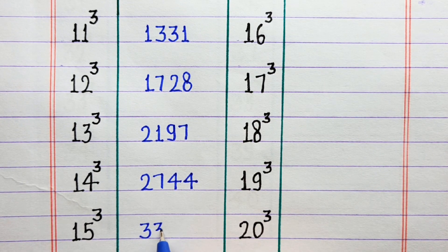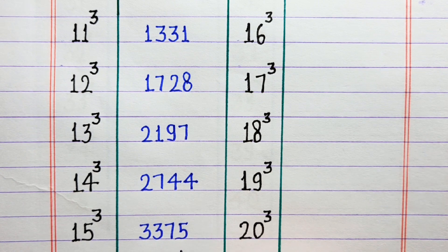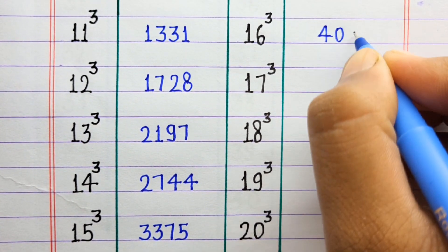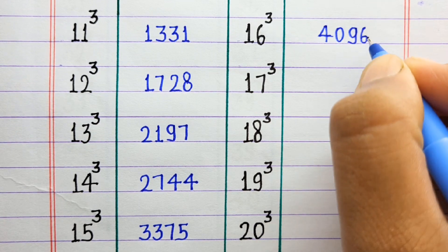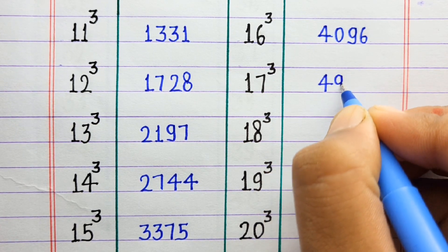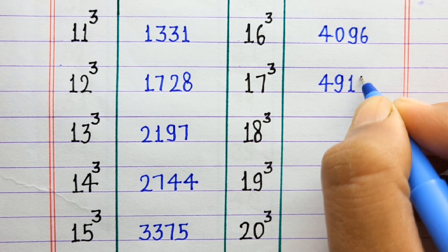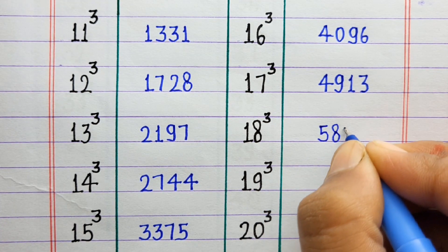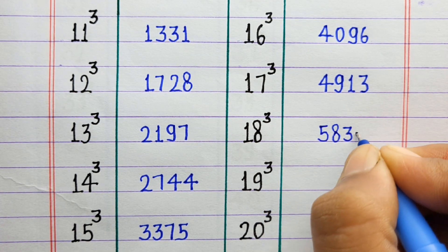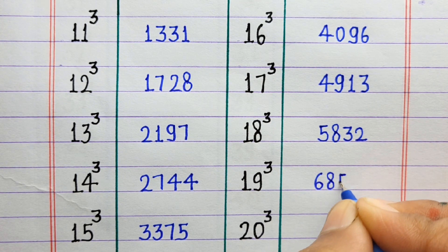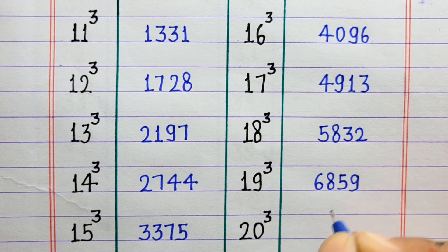15 ka cube 3375. 16 ka cube 4096. 17 ka cube 4913. 18 ka cube 5832. 19 ka cube 6859.